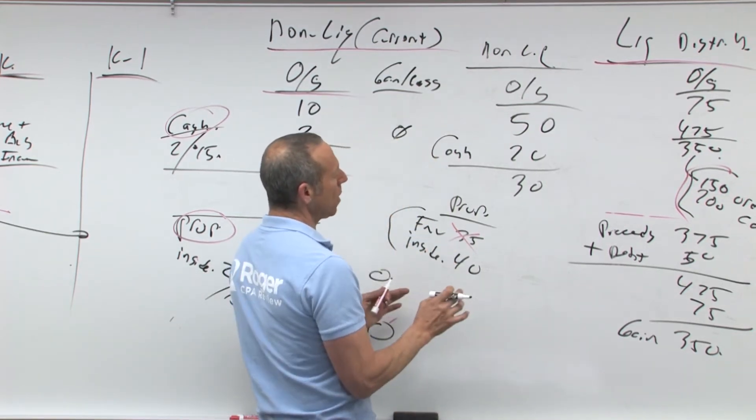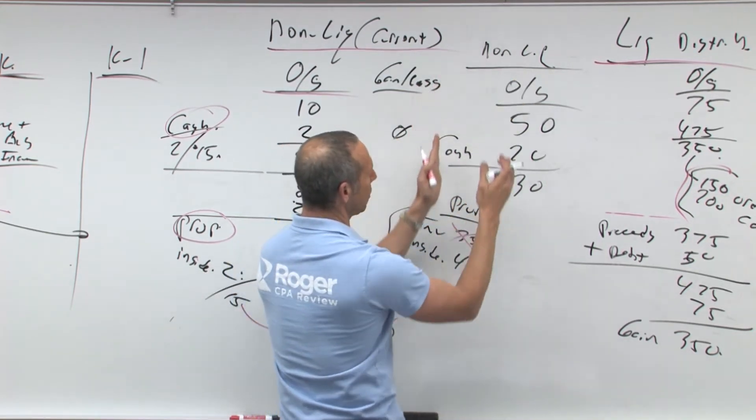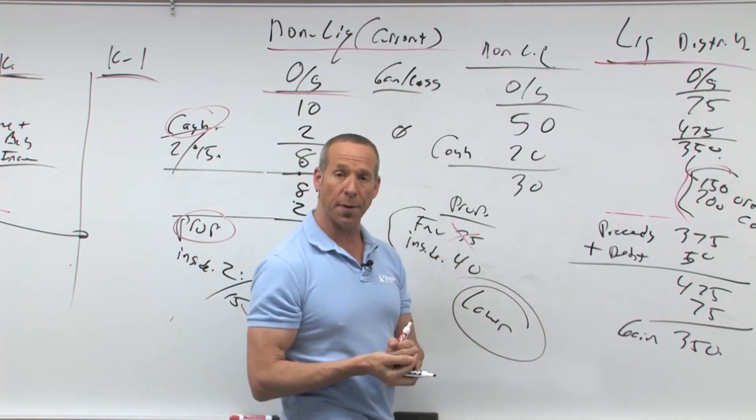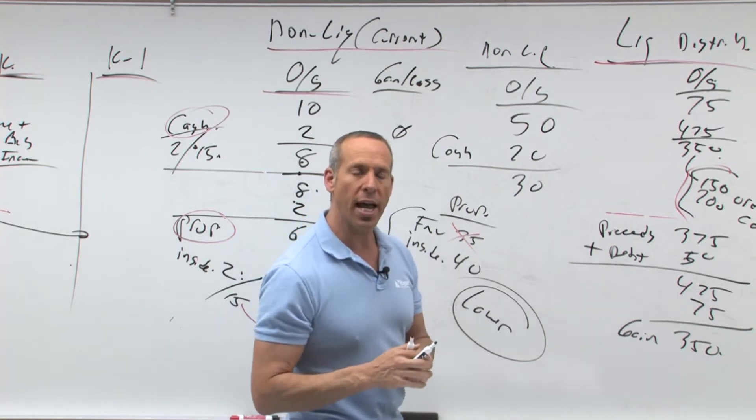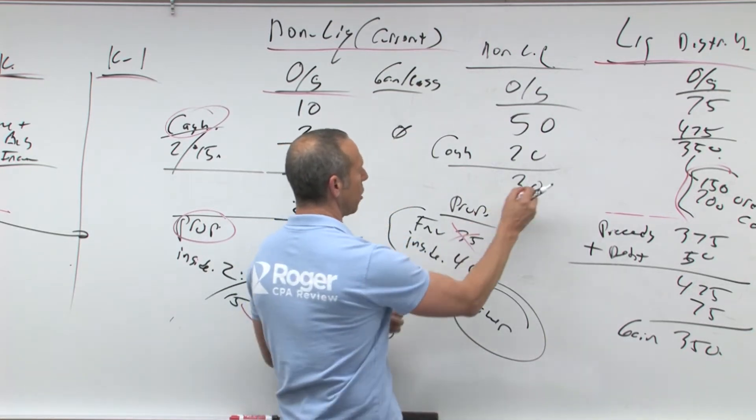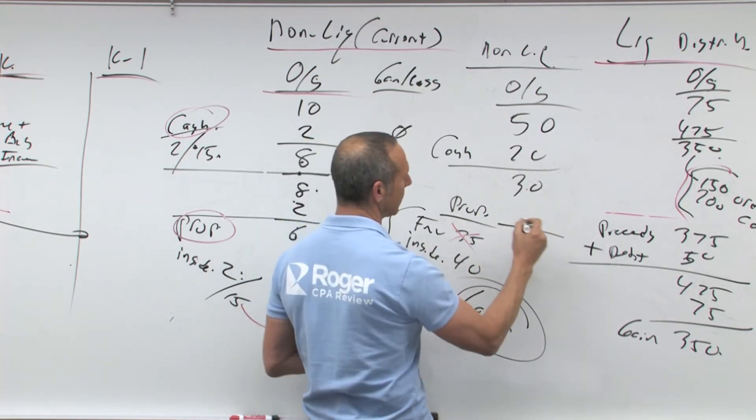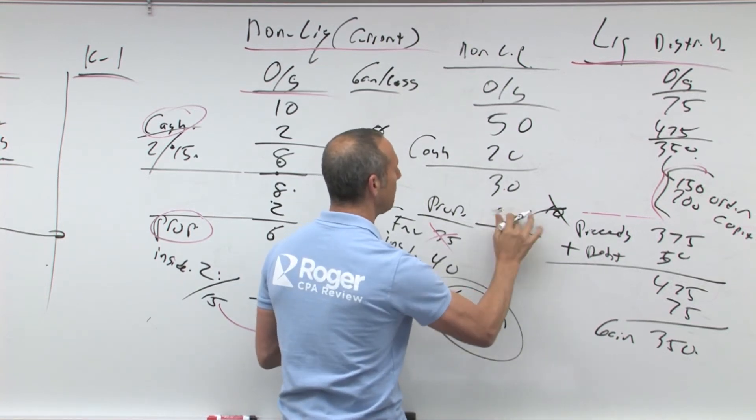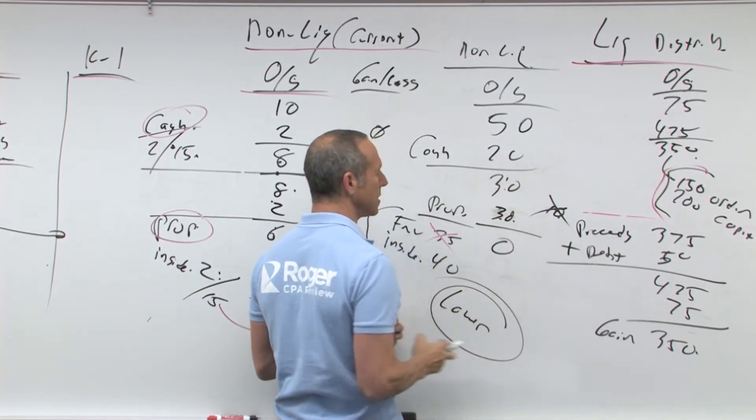Now we got property. What is the rule? Non-liquidating property, you pick it up at the lower of inside or outside, lower. What if it's liquidating? Always pick it up for outside. So in this case, what's lower, 30 or 40? Well you can figure it out this way. If I put 40, I'd have a gain. You can't have a gain on property. So I've got to pick it up for 30, my basis is zero.